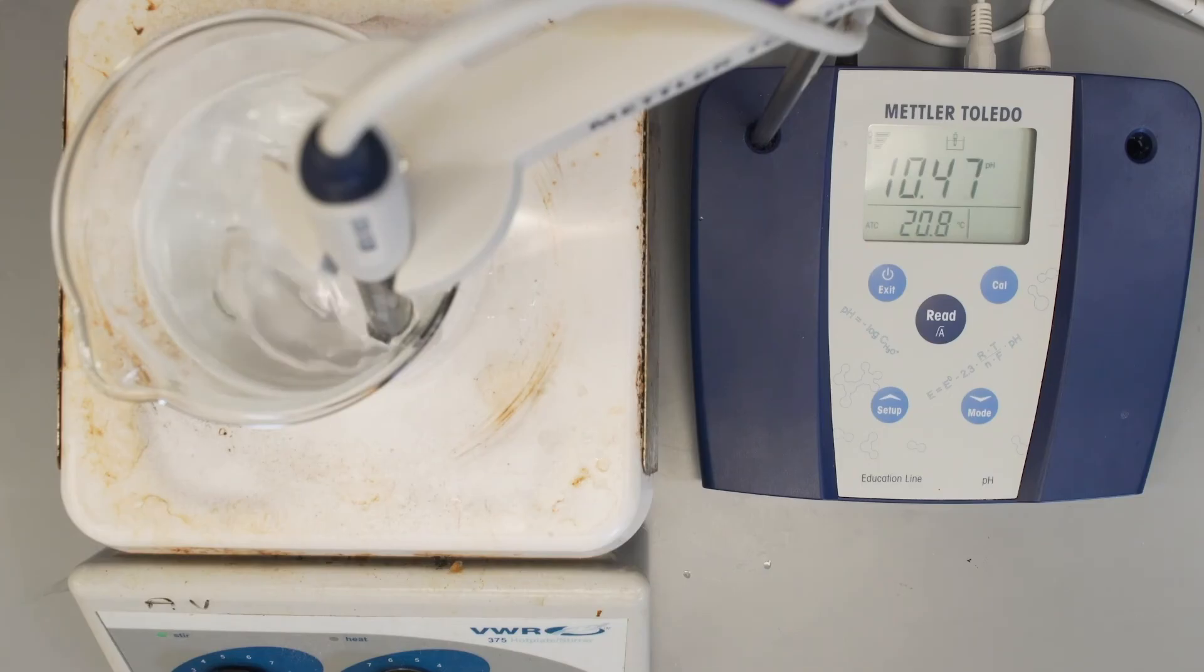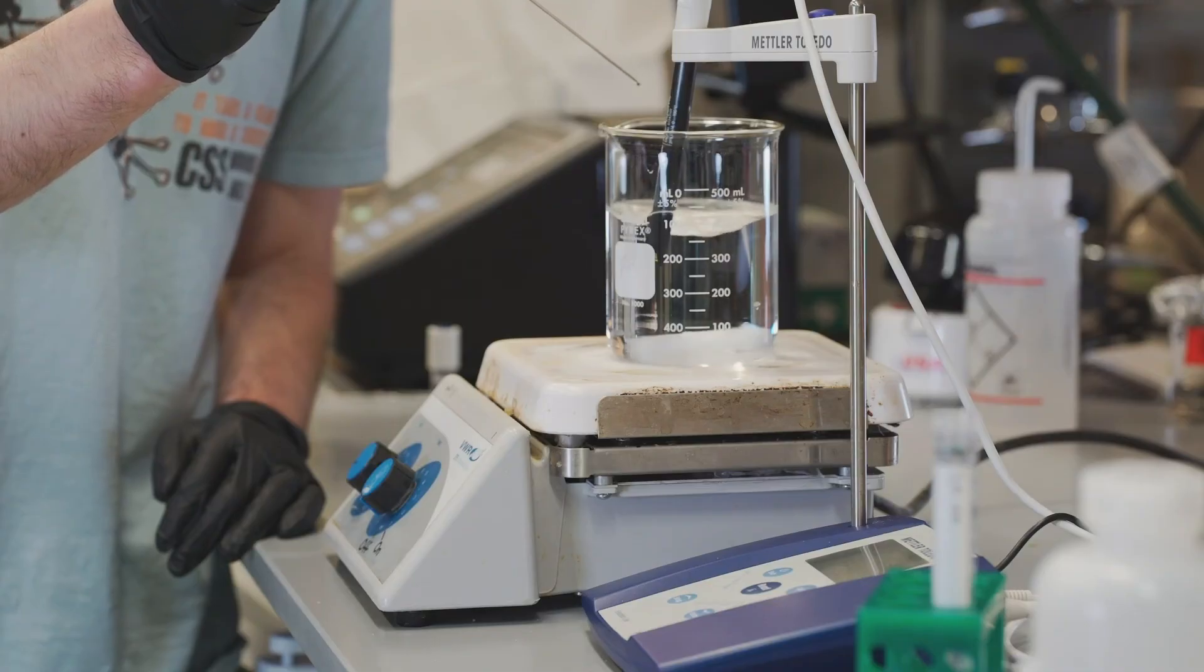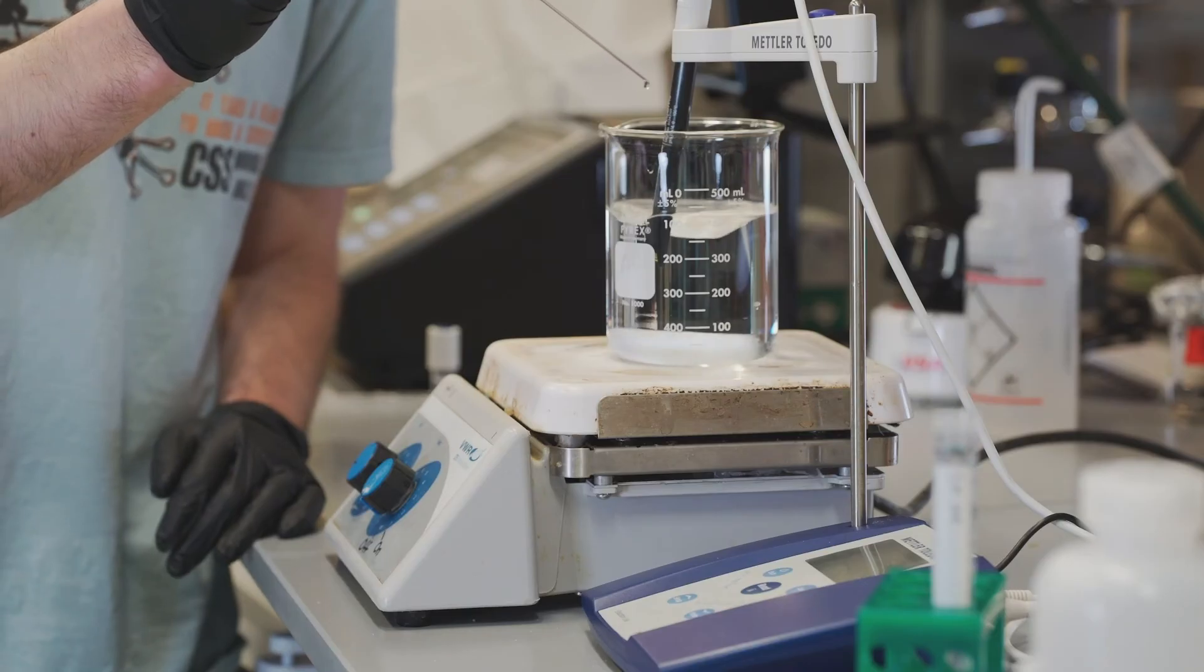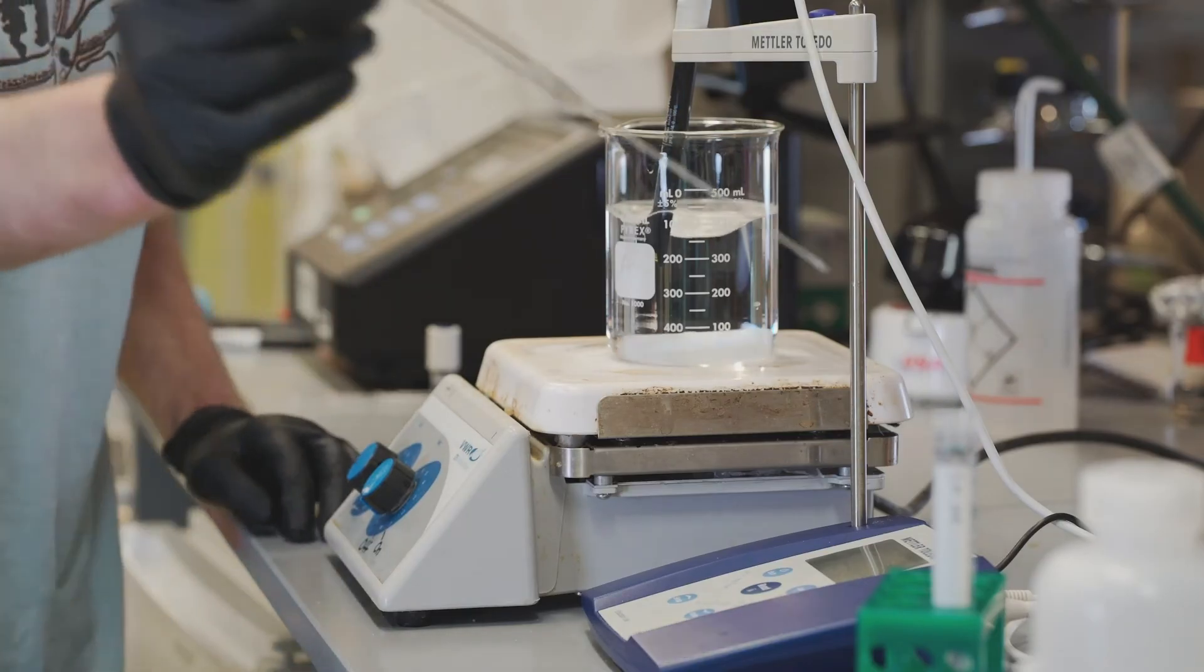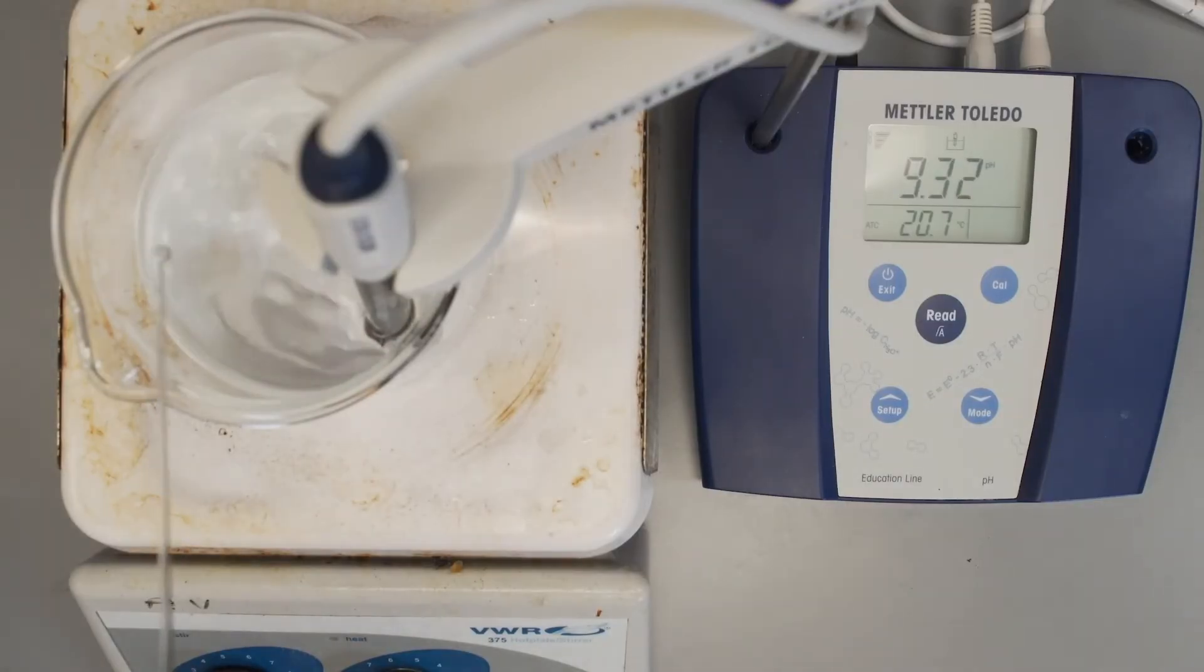But for our experiment, we need the Tris buffer solution to be at pH 8. So we're going to add drops of hydrochloric acid to get it down. The pH meter will help us keep track of the changes in pH as we add the acid so that we don't overshoot our desired pH. As the drops are added, the pH meter reading decreases gradually until we reach 8.